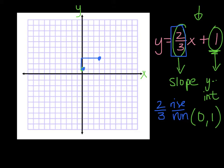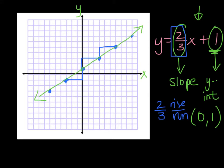I'm going to do the same thing: go up 2, over 1, 2, 3 — put a point. I can keep going: up 2, over 3 — there's my next point. If I want to go back the other way to get points in the other direction, I just think backwards — instead of going up 2, I go down 2 and back 3. So down 2, back 3 — there's my next point. Down 2, back 3. Now I can connect these points and I have a straight line. I graphed that without making a table.